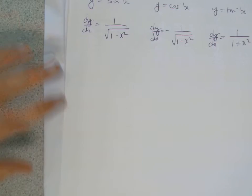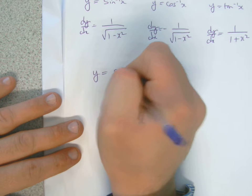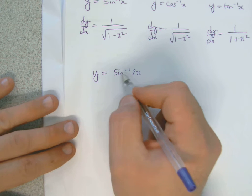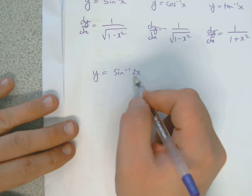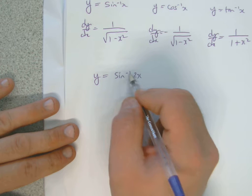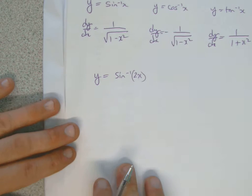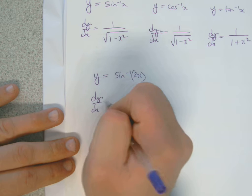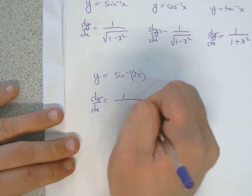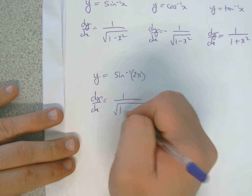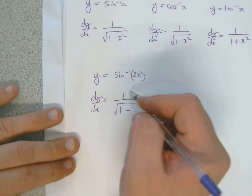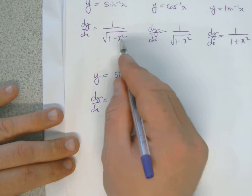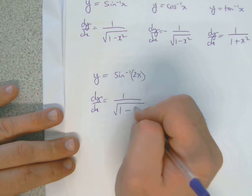Now if I was given this, for instance, and asked to differentiate sine to the minus 1 of 2x — remember, this is a function of a function. Sine to the minus 1 is the outside function, and 2x is the inside function. So you differentiate the outside function first: sine to the minus 1 becomes 1 over square root. Now my x becomes 2x, because it's sine to the minus 1 of 2x, so I've got to put 2x in there — but remember you've got to square it, and square all of it.